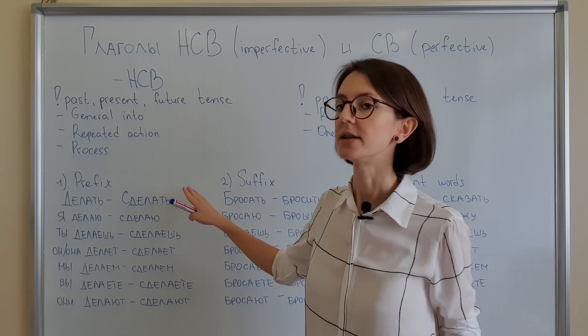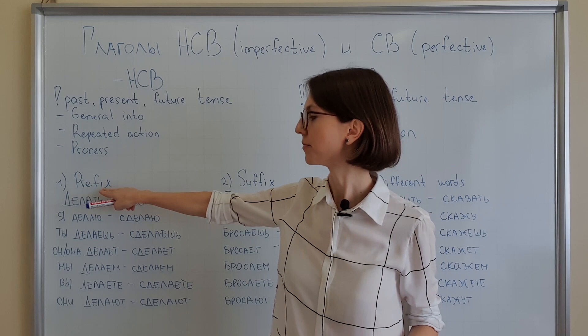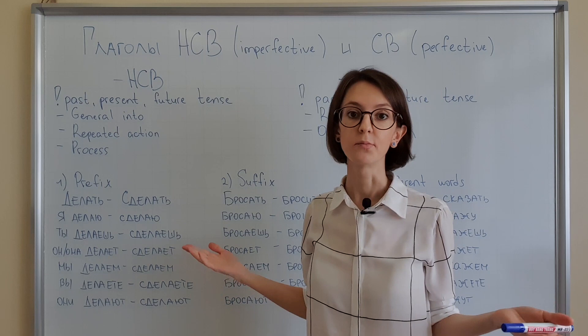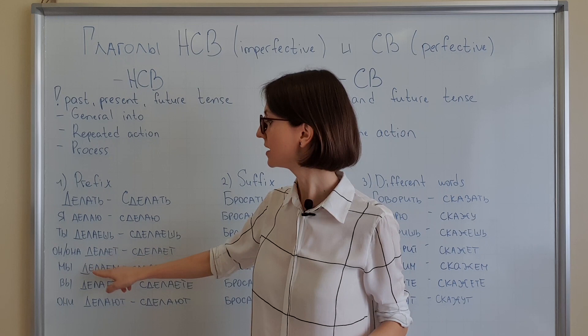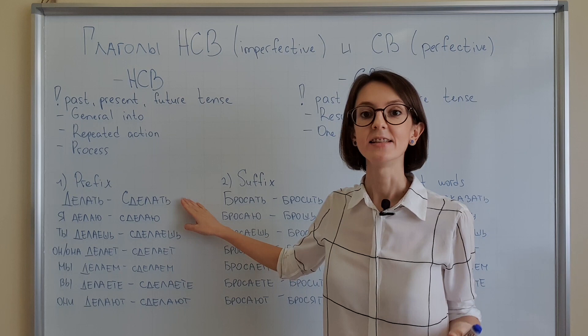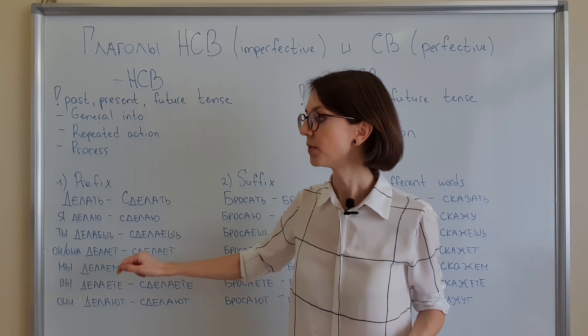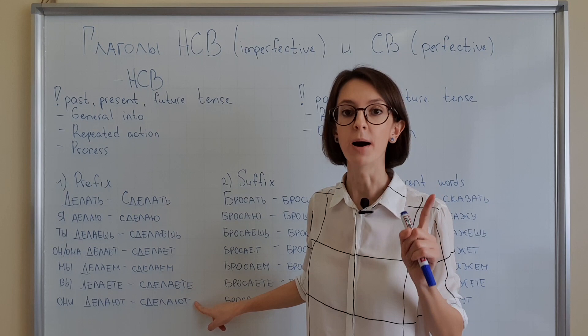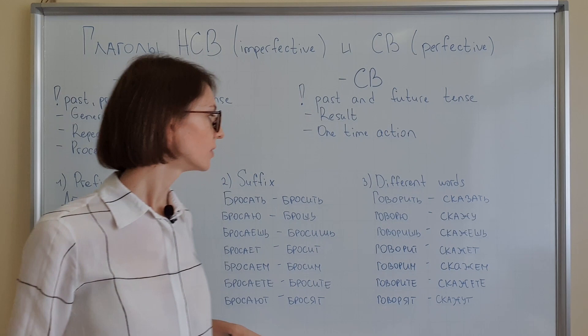Let's have a look at the first table — verbs created with prefixes, the easiest group. Take the example: делать / сделать. Conjugating делать as present: я делаю, ты делаешь, он/она делает, мы делаем, вы делаете, они делают. Now сделать (SV) — we conjugate it the same way, just add the prefix с: сделаю, сделаешь, сделает, сделаем, сделаете, сделают. But it will be future tense.